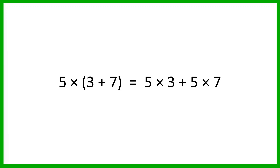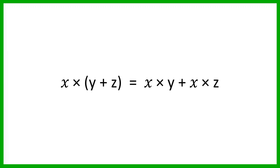With normal numbers you won't have to do this, because you can add the 3 and the 7 and multiply the 5 by 10. But we do need to be able to do this when we are working with algebra. Like in this example, I can't add the y and the z because they are not like terms, so I need a different way of multiplying to simplify and get rid of the brackets.